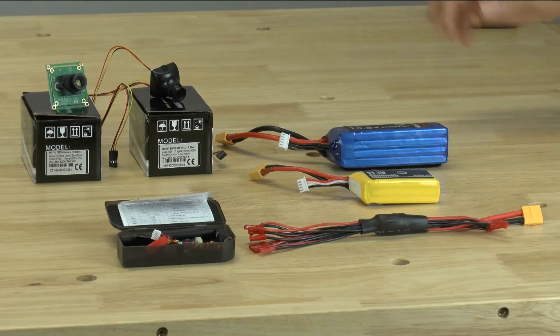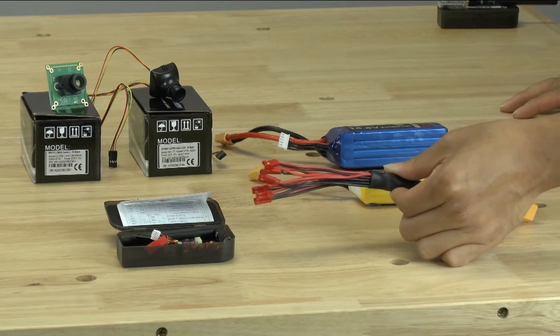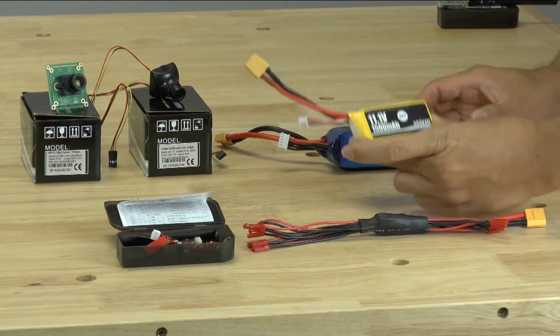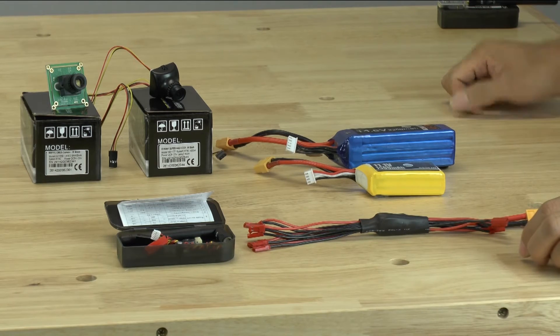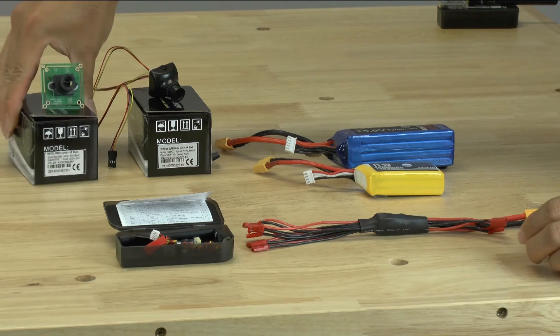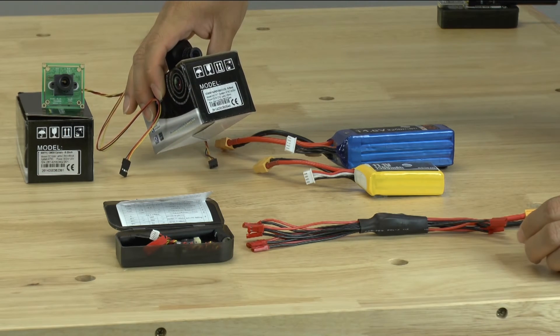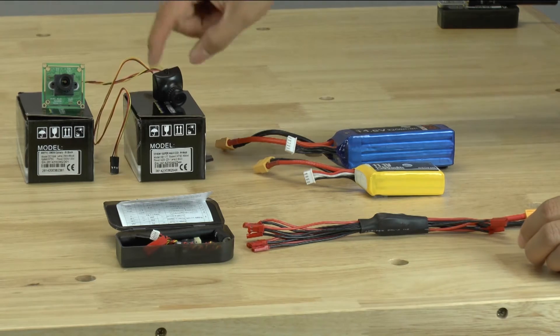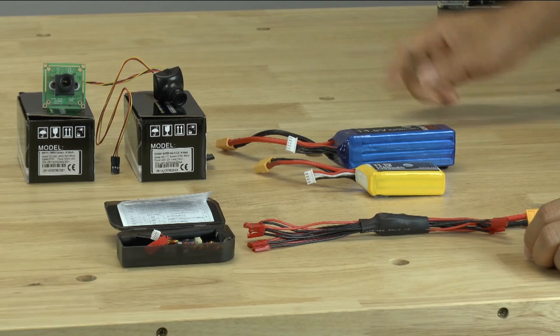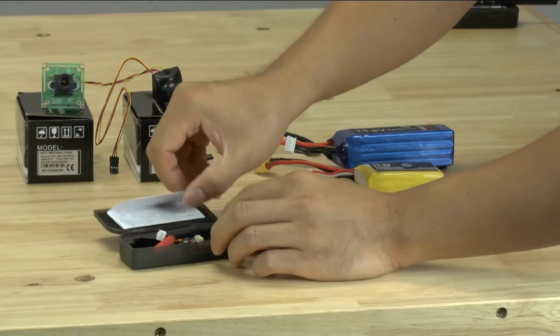So we have everything we need to actually set up a FPV setup. We have our video transmitter, a power distribution cable, a 3-cell and a 4-cell LiPo battery. And we have two cameras that we can hook up. So this is a 800 TVL CMOS camera and this is a Sony CCD camera, which is 600 TVL. Both of these are very good cameras, and you can see the resolution once we hook it up to our monitor or start transmitting to our monitor. So let's go ahead and get started.